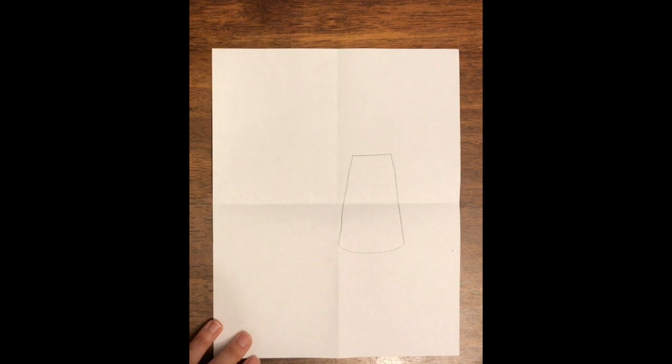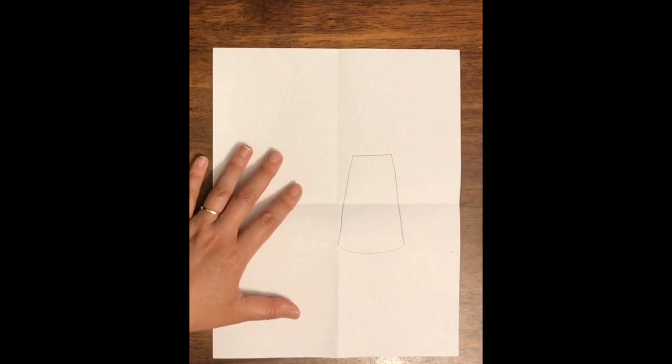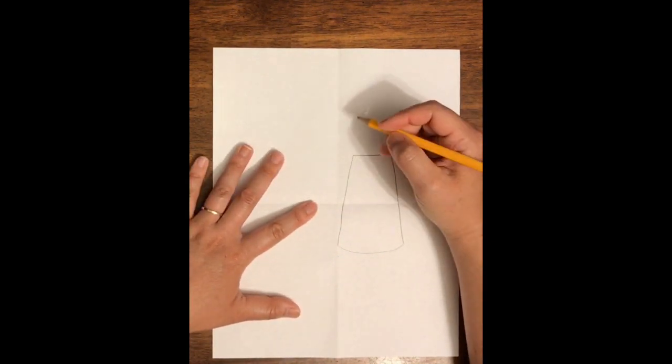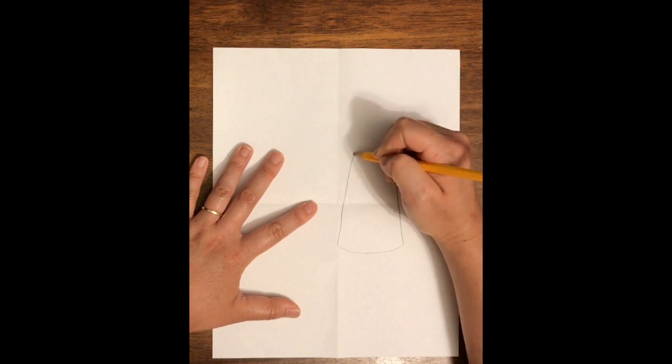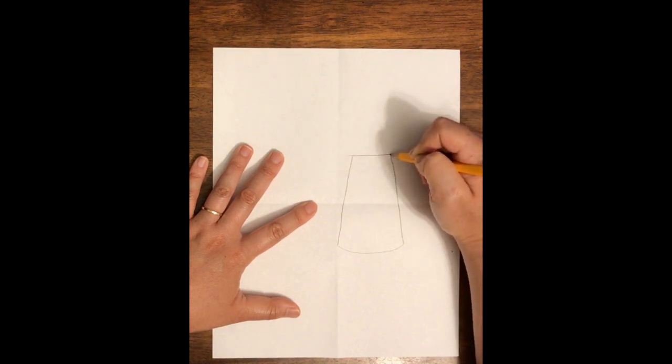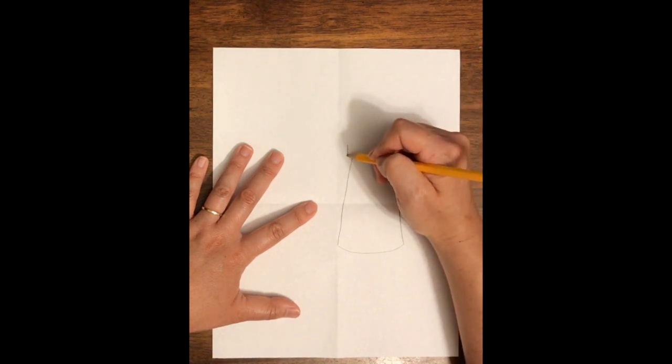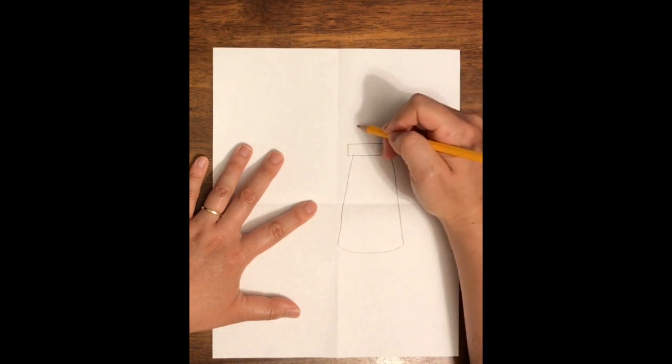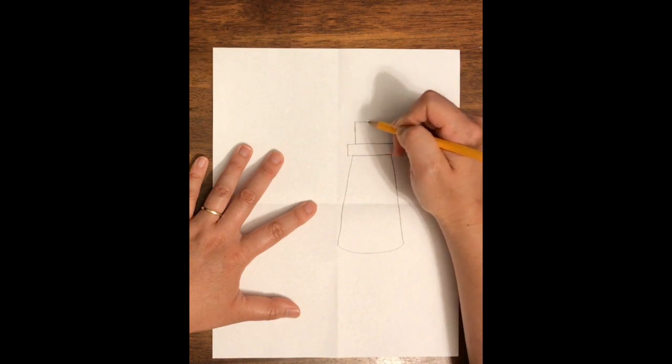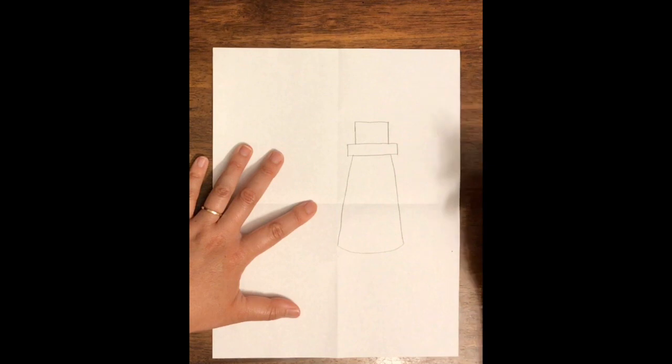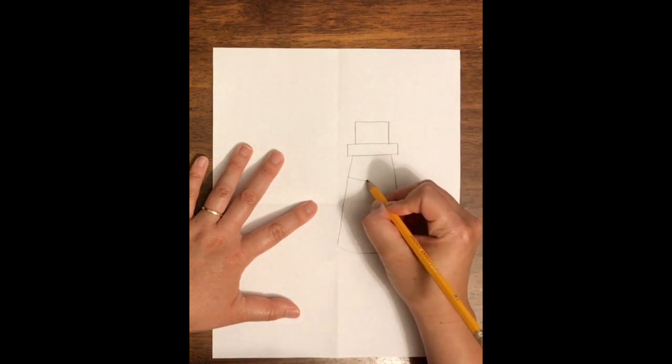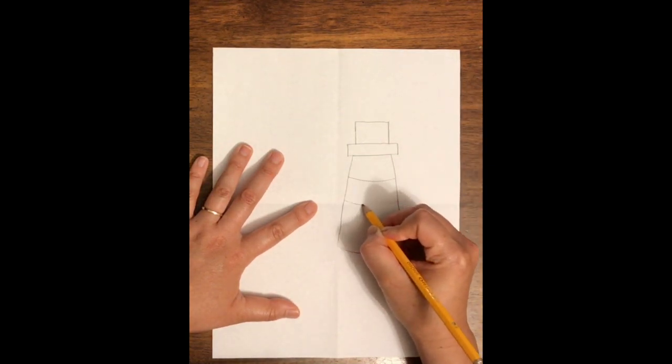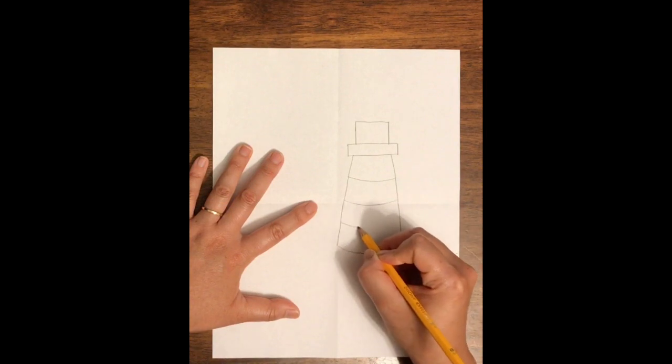Step two: add the top of the lighthouse. It's going to be slightly wider than the top of the lighthouse, so extend it just a little bit and make a rectangle. Then put a square right above it, and that will be the top of your lighthouse. Then you're going to put some decorative stripes if you'd like across the body of the lighthouse.